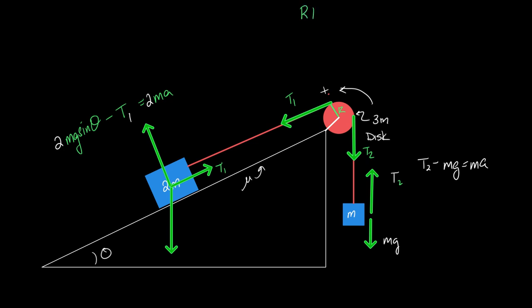So, RT1 minus RT2 equals I alpha. But I go more than that. I know that the pulley is a disk. And that means one-half MR squared. I have to use the mass they gave me, which is 3M. And instead of alpha, I'm going to put A over R, because Yemo asked the question, does the string slip along the pulley? And I said, no. That's what solidifies A over R for alpha.